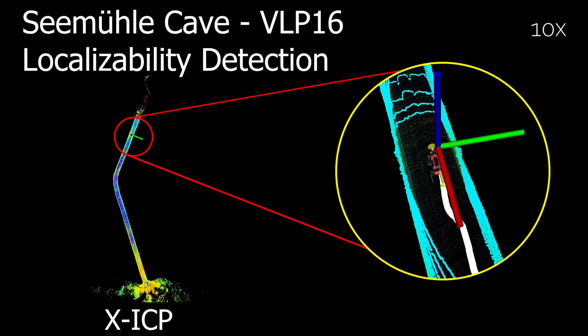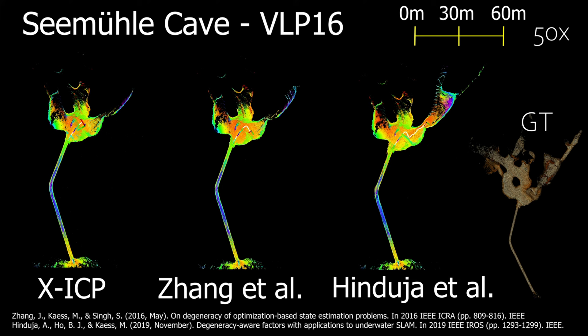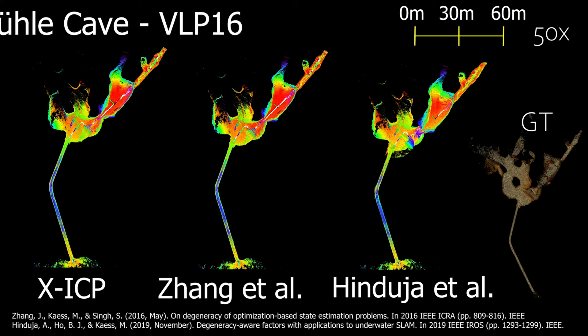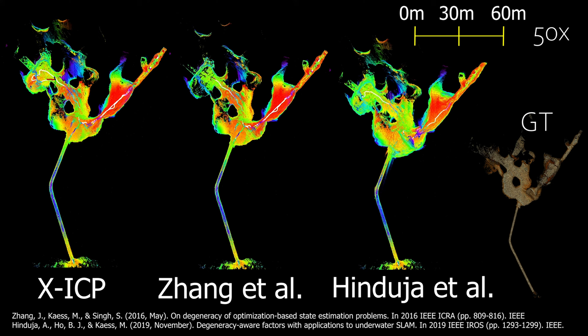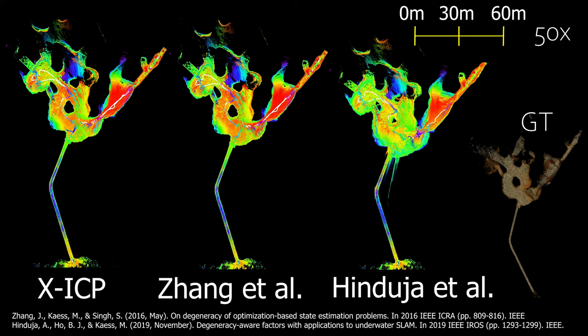In this dataset, LiDAR degeneracy occurs only at the tunnel section, and accurate detection of the degeneracy in this section is critical for robust pose estimation and accurate mapping. As seen from the map, due to inaccurate detection of the degeneracy in the tunnel section, the state-of-the-art methods fail to register the tunnel correctly, whereas the proposed framework can complete the course reliably.